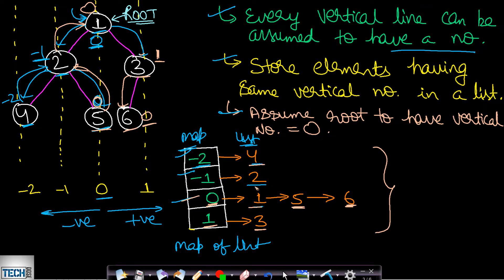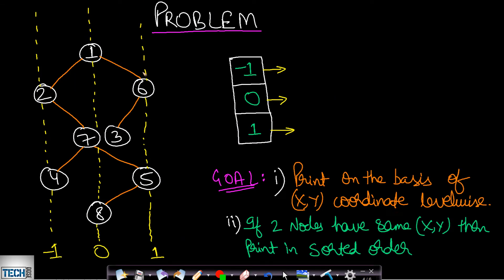So the final vertical order traversal can be printed as 4, 2, 1, 5, 7, and 3. However, there is a problem — you cannot apply just simple DFS to solve this problem, as there are more constraints.